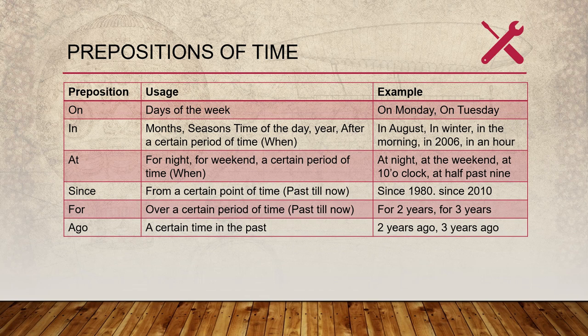'At' is used for a point during the day. For example, at night, at the weekend, or at 10 o'clock and half past 9 o'clock. 'Since' is used from a certain point of time in the past — for example, since 1980. 'For' is used over a certain period of time — for example, for two years or for three years. 'Ago' is used for a certain time in the past — for example, two years ago or three years ago.